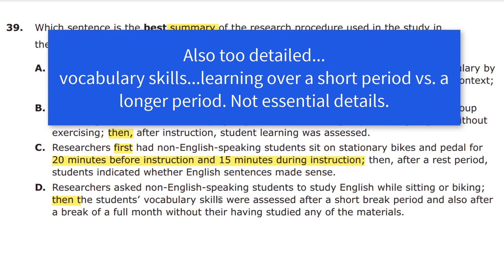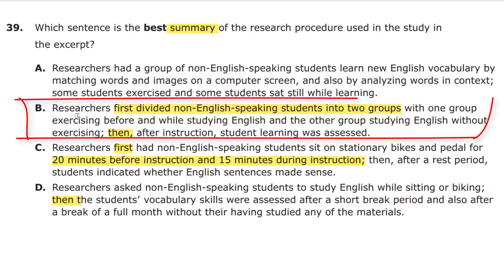It says vocab skills but doesn't say anything about their deeper learning skills. D is not the correct summary. The correct answer for question 39 is B — it has the right order, it hits upon the key events without providing too much detail and without leaving out any key parts. B is the correct answer for 39. Thanks for tuning in.